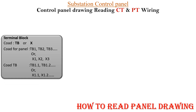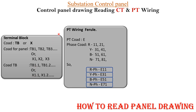Let's quickly revise all the concepts. TB or X is the indication of a terminal block. The group of TBs is called X1, X2, X3 or TB1, TB2, TB3. An individual TB inside that group is called TB1.1 or X1.1.